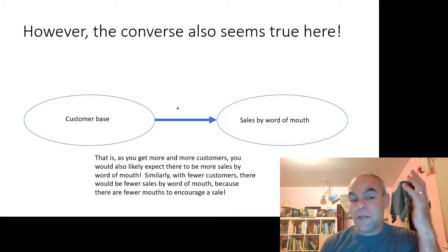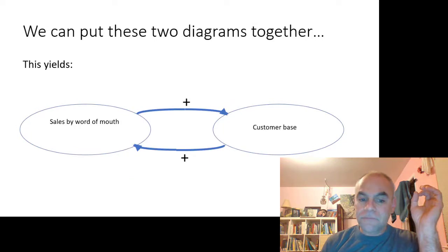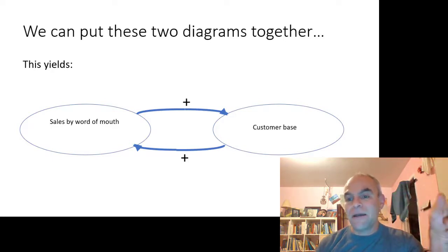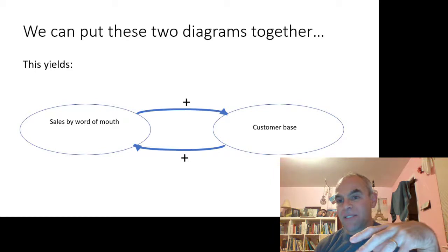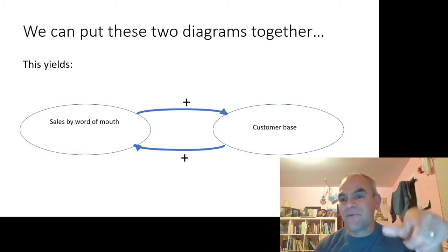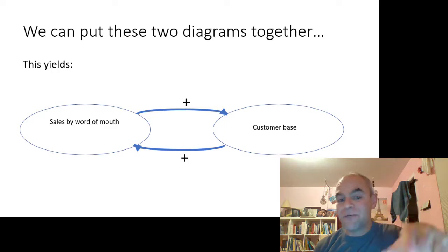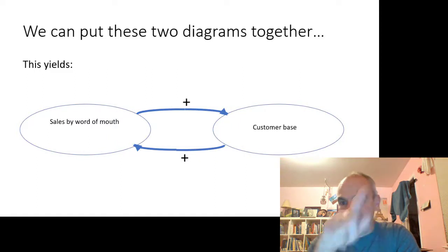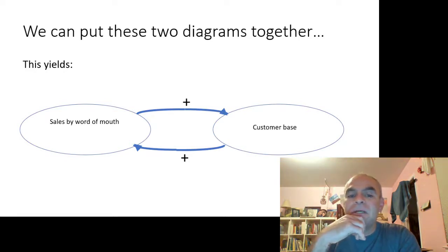We can put all of that on one diagram. We don't have to limit ourselves to things affecting each other in just one direction — that effect can go back. This is an example of feedback. Sales by word of mouth increases the customer base, and as the customer base gets bigger and bigger, that's going to in turn increase the number of sales by word of mouth. So you get a positive correlation in both directions. If one of them goes down, the other one will go down, causing yet the other one to go down — spiraling downward. This is an example of feedback.